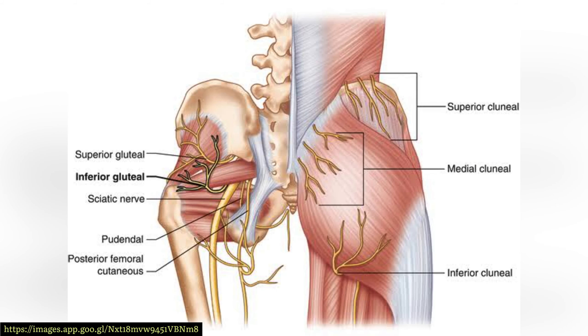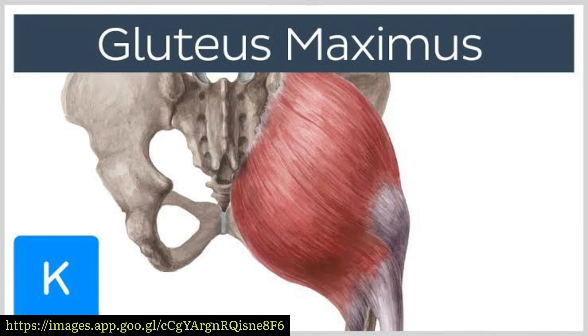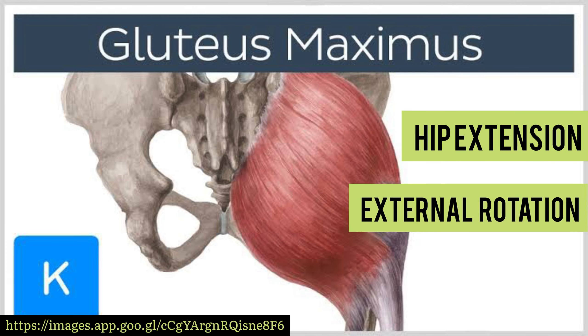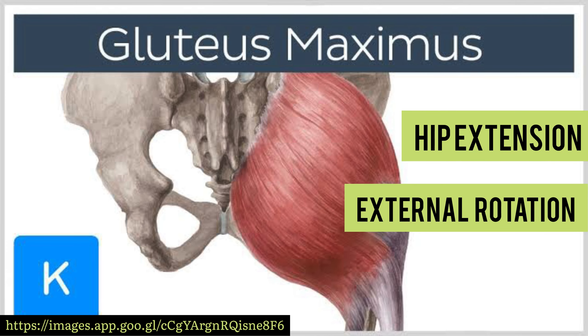The inferior gluteal nerve supplies the gluteus maximus muscle, as it provides motor function to this major muscle involved in hip extension and external rotation.